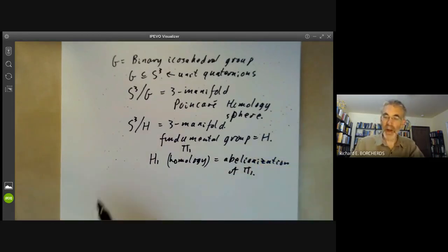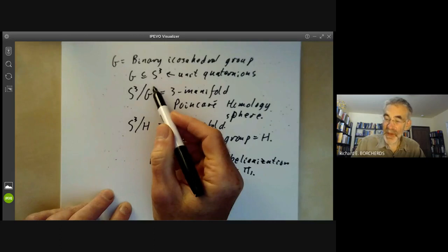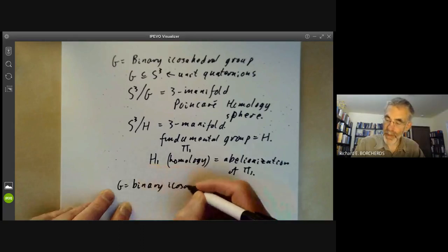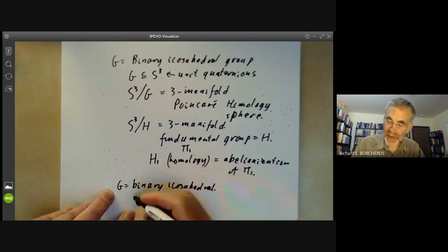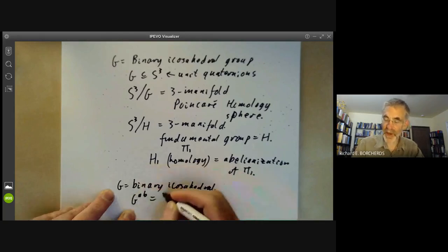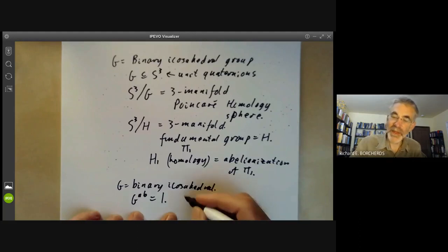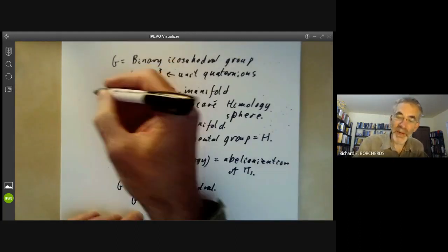Now the group, this group, the binary icosahedral group has the property that the abelianisation is just trivial. This is quite easy to see from the fact that the group A5 is simple. So the abelianisation must be contained in the centre of order 2 and the abelianisation can't be of order 2 because the binary icosahedral group has no homomorphisms to a group of order 2. So this group has vanishing first homology.